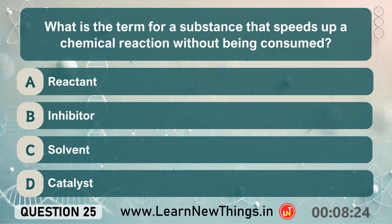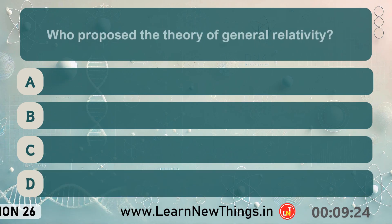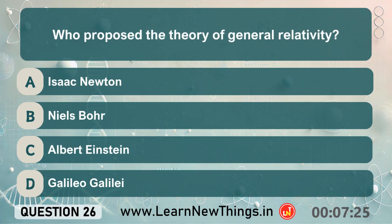What is the term for a substance that speeds up a chemical reaction without being consumed? Catalyst. Who proposed the theory of general relativity? Albert Einstein.